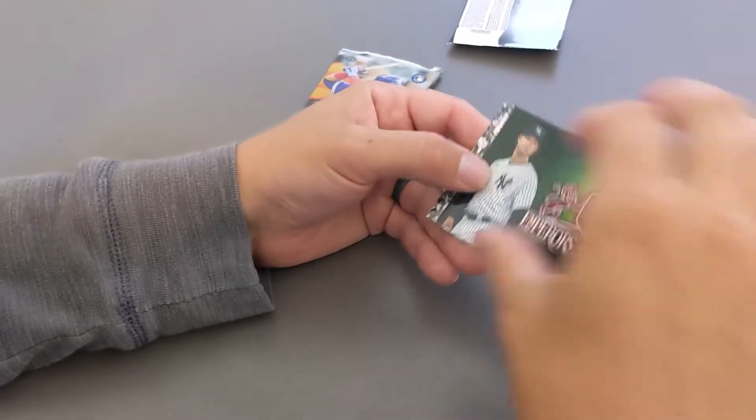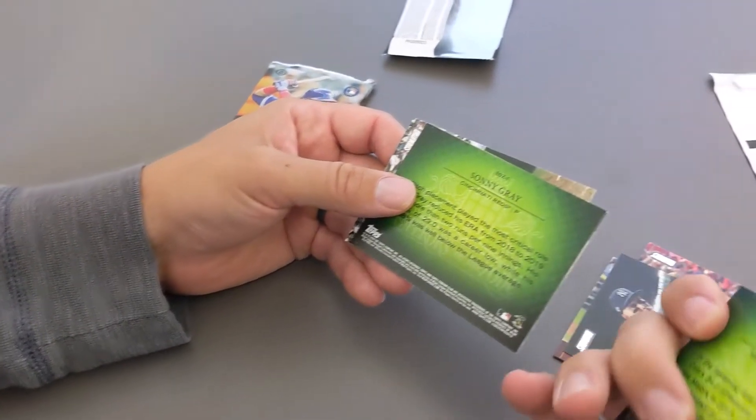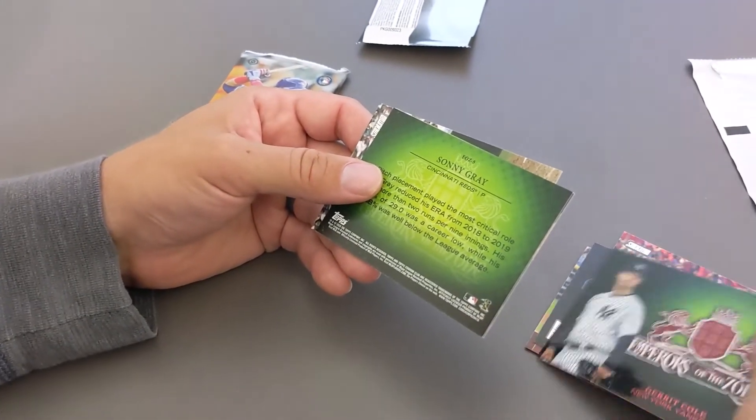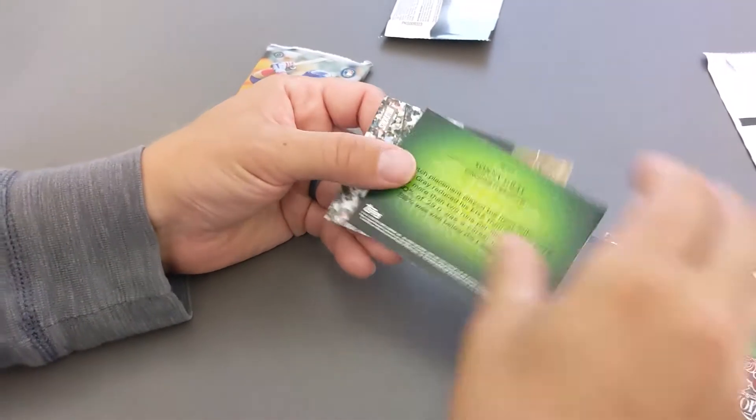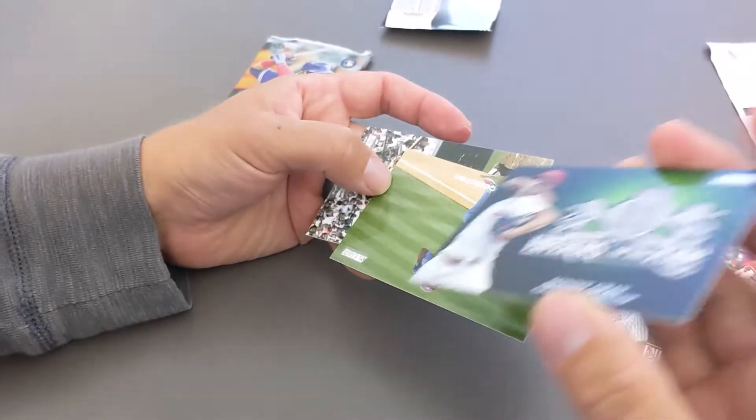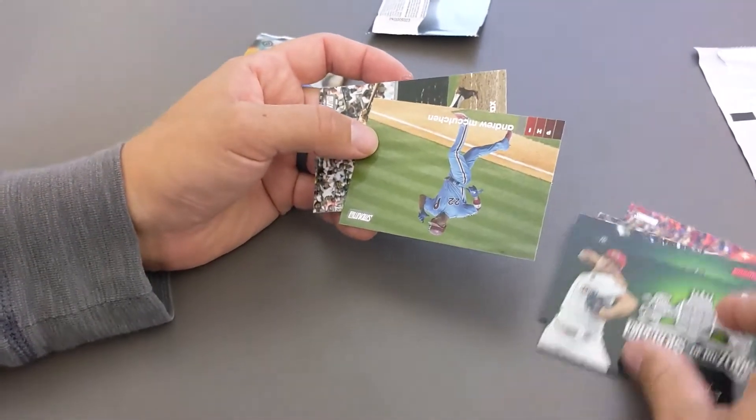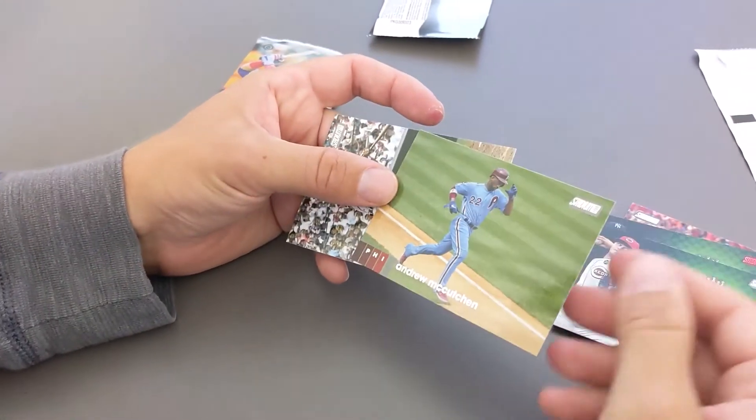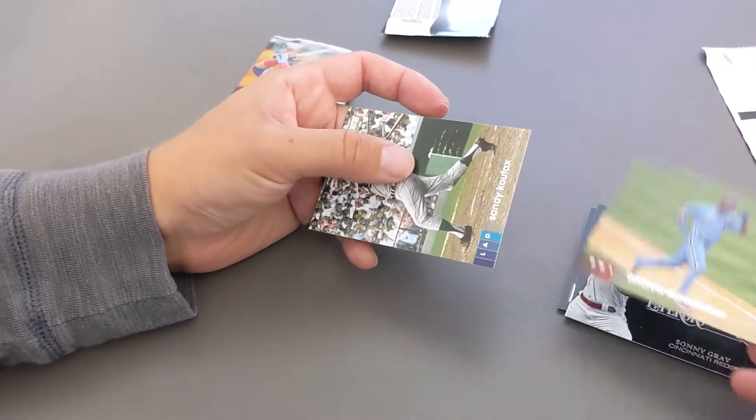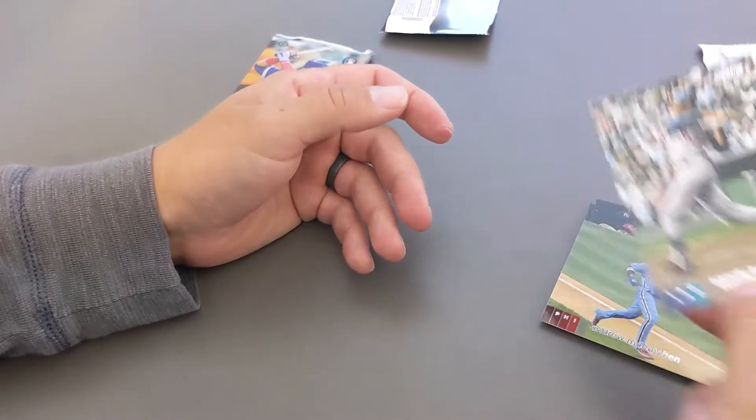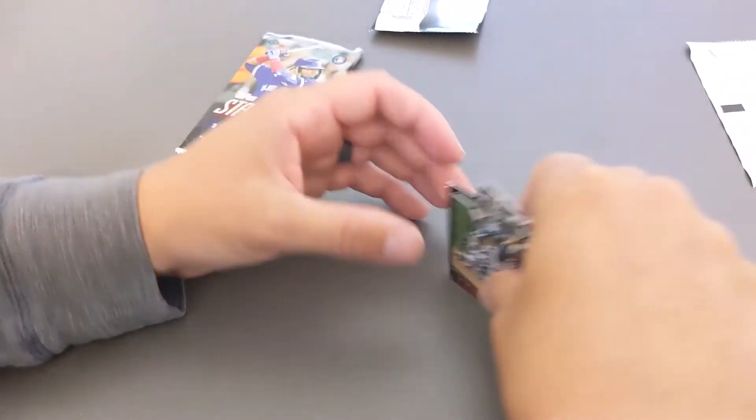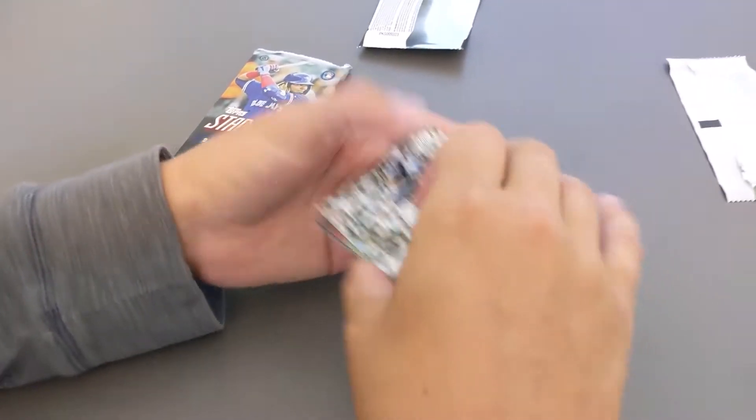Emperors of the Zone. Garrett Cole. And then it looks like another Emperors of the Zone. Back to back with Sonny Gray. And we have Andrew McCutchen. There's a filly. And we have Sandy Koufax. So a couple of insert cards, the Emperors of the Zone there.